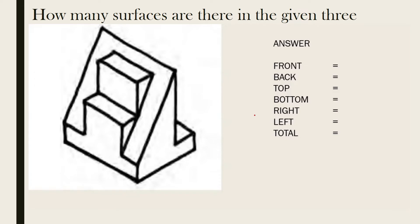Let's see another easy question of counting surfaces. Here the front surface is one. Then this one, it's two. Then the slant one — this full slant one, we have to count it as the third surface. So the front surfaces are three. From the back, it's given that the surface not visible is a flat one. So this whole one from the back is one surface.